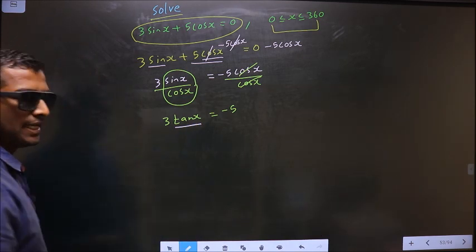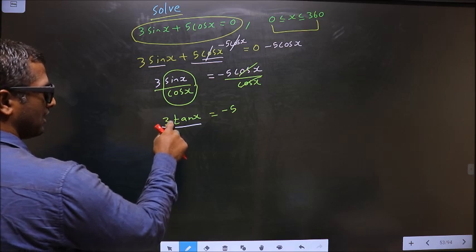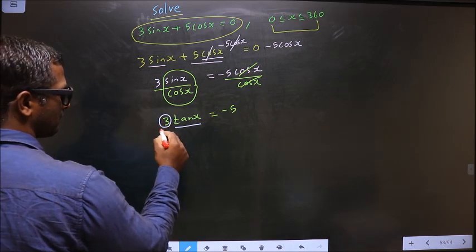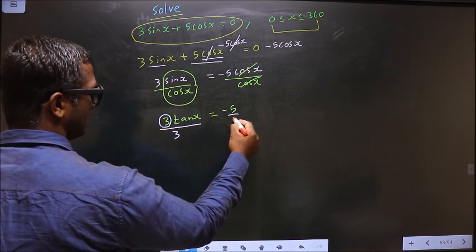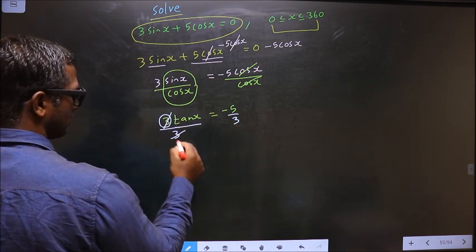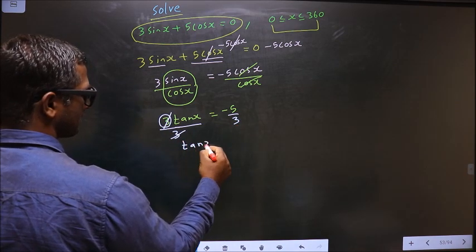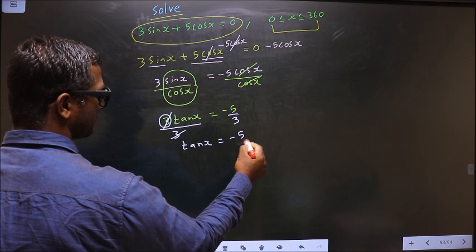So tan should be made the subject. For that, I should remove this 3. To remove 3, you divide by 3. So we get tan x equal to minus 5 by 3.